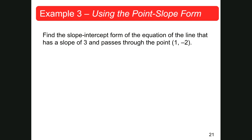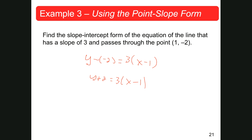Find the slope-intercept form of the equation of the line that has a slope of 3 and passes through the point 1, negative 2. It's going to be y minus negative 2 is equal to 3 times x minus 1. I usually don't leave a minus minus, so this would just be y plus 2 is equal to 3x minus 1. Do not leave a minus minus — just change it to plus.